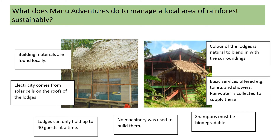Specifically, what does Manu Adventures do to manage the rainforest sustainably? First, the lodges that guests stay in have been designed to be sustainable. The building materials are found locally, which means you don't have to build roads — avoiding the need to clear rainforest to transport materials to the build site. The electricity comes from solar cells on the roofs of the lodges, giving a very small carbon footprint compared to burning fossil fuels.